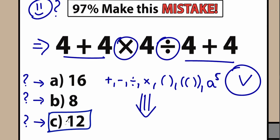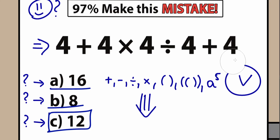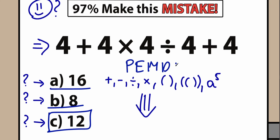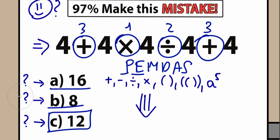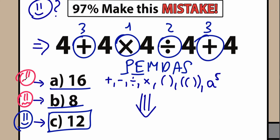A lot of students might think 16 or 8 is the correct answer because they try to solve the question randomly. They think, 'maybe let's add it first,' and it turns into a big argument. Forget about using different random orders — we need to know PEMDAS. If your answer was 8, review your basic math. If your answer was 16, you also need to review your basic math.